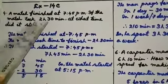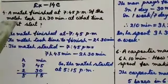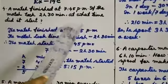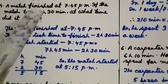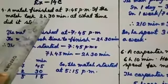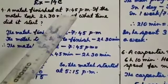A match finished at 7:45 pm. If the match took 2 hours 30 minutes, at what time did it start? That means the match finished at 7:45 pm and it continued up to 2 hours 30 minutes. So how will you write your statements?